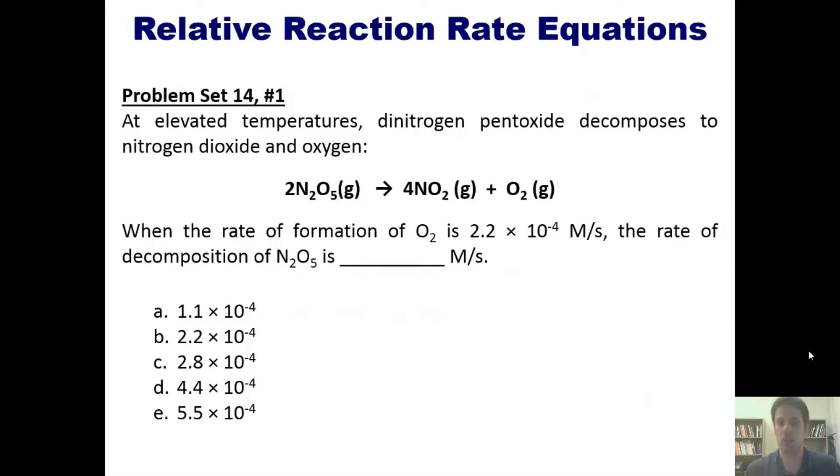So this brings us to a problem. At elevated temperatures, dinitrogen pentoxide decomposes to nitrogen dioxide and oxygen according to this equation. When the rate of formation of O2 is 2.2 times 10 to negative 4 molars per second,